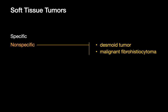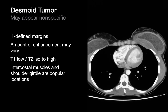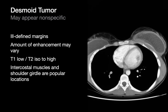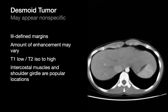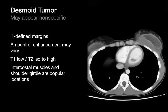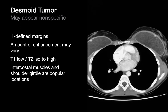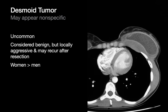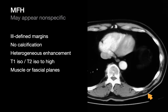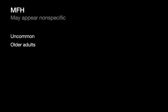Two soft tissue tumors that tend to be quite non-specific on imaging are desmoids and MFH. When desmoid tumors appear in the chest wall they'll often present as a soft tissue lesion with indistinct margins. The intercostal muscles and shoulder girdle are the most common locations. Desmoids tend to be classified as benign but can demonstrate locally aggressive behavior. MFH is another soft tissue tumor of the chest wall that usually presents as a pretty non-specific soft tissue lesion; it's uncommon and usually occurs in older folks.